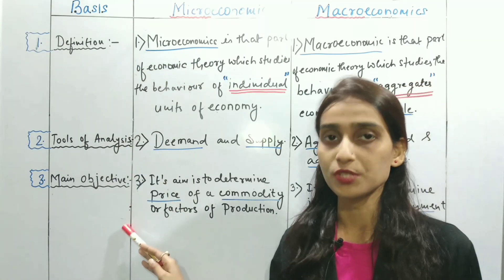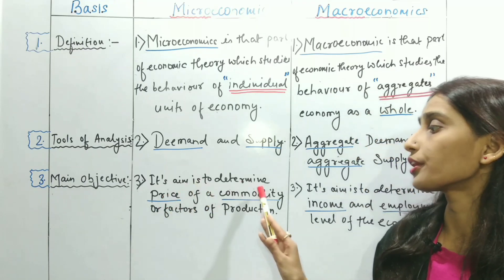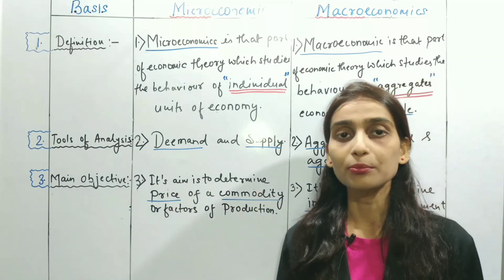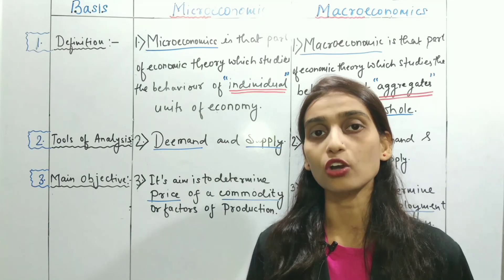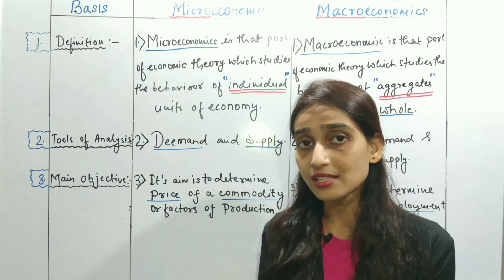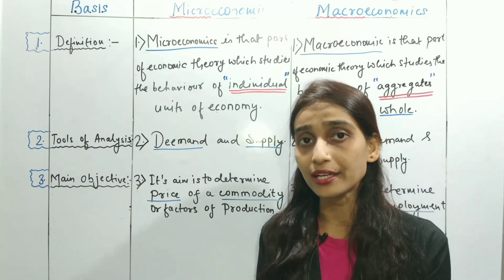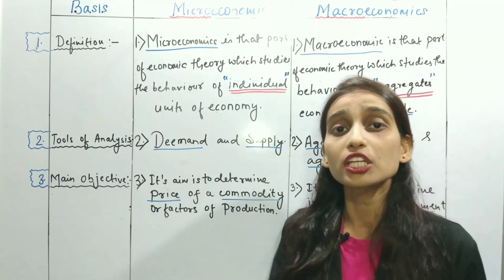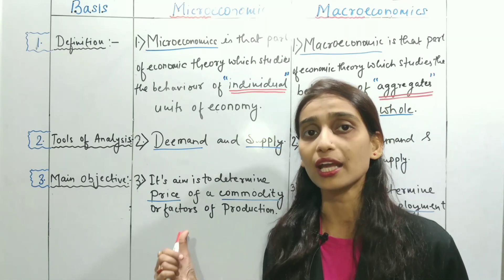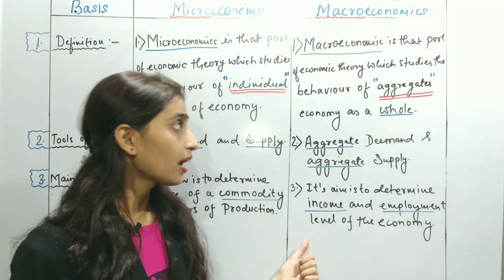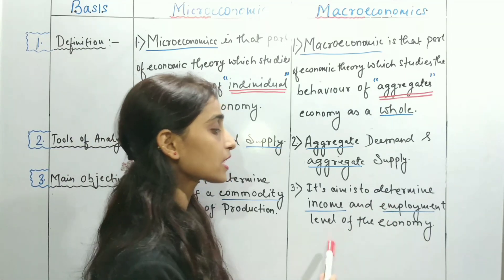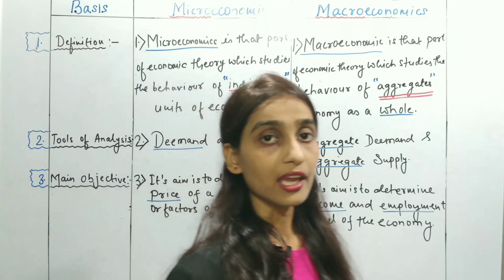The third difference is on the basis of main objective. In microeconomics, the aim is to determine the price of a commodity or factor of production — analyzing individual units to determine price. In macroeconomics, the aim is to determine the income and employment level of the economy.